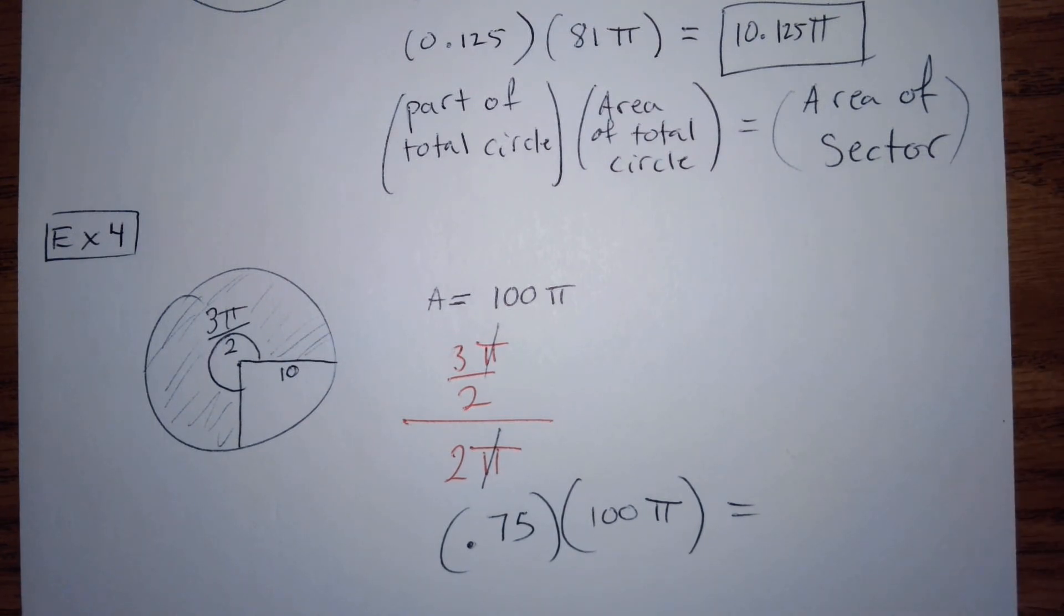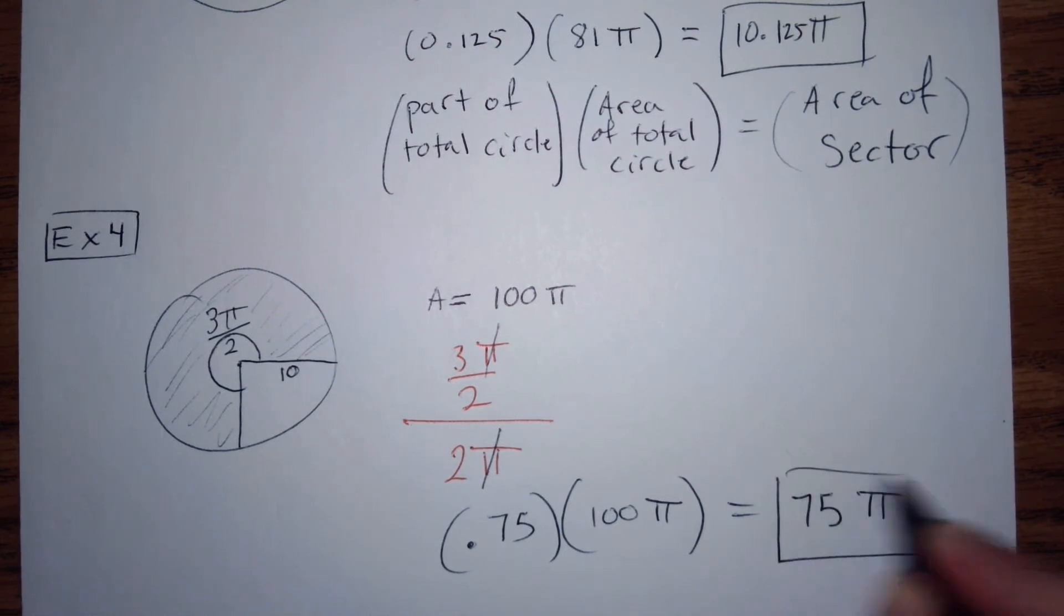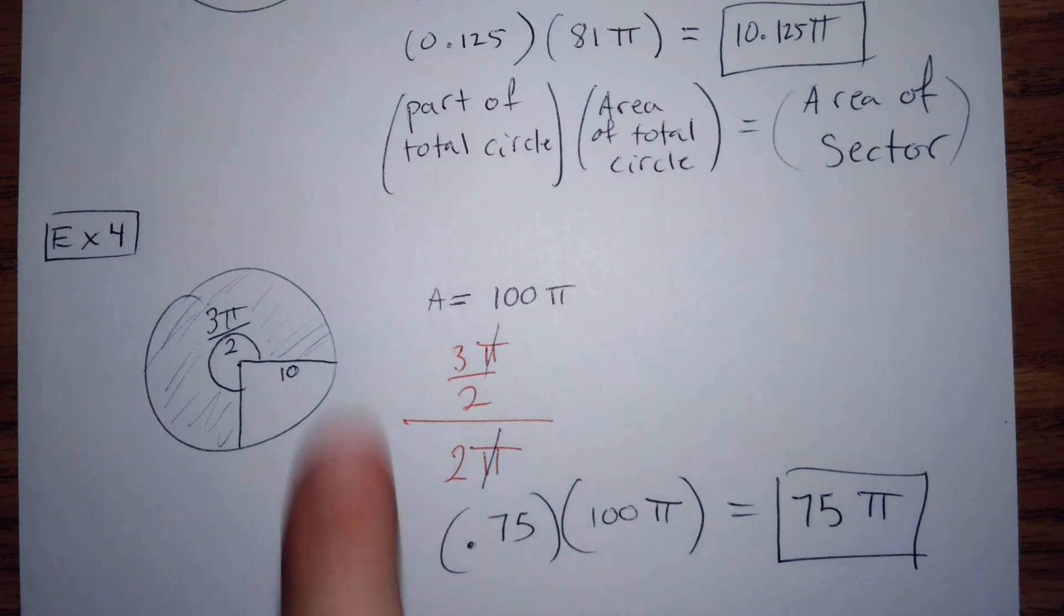What's 3 quarters of 100? 75. Yeah, it's 75. We're just multiplying, moving the decimal over. 75, and then we'll tack on that pi there. So it's that same formula, except you're just using radians.